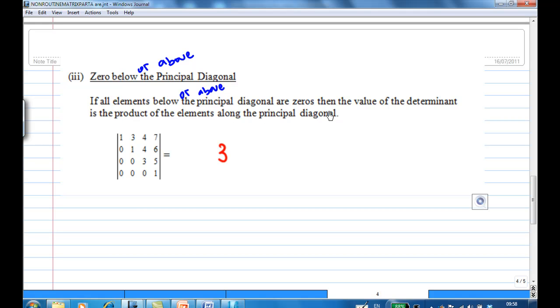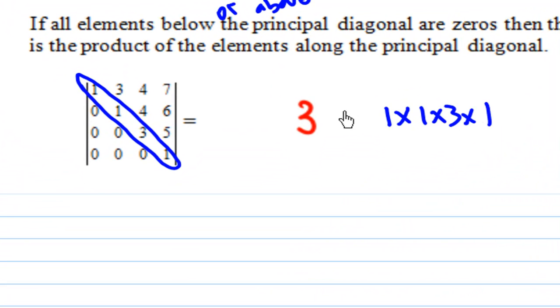For example, given this determinant, you see that all the entries above the principal diagonal are zero. Then the determinant is the product of all these four numbers: 1 times 1 times 3 times 1, which is 3.